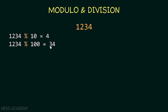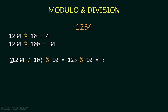To get the third digit we have to get rid of the fourth digit. If we say 1234 divided by 10 modulo 10: first, 1234 divided by 10 gives us 123 because this is integer division. Then applying modulo 10 on 123 gives us 3. That is how we get the third digit.